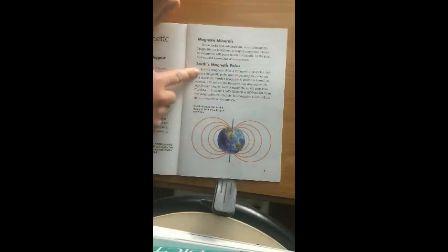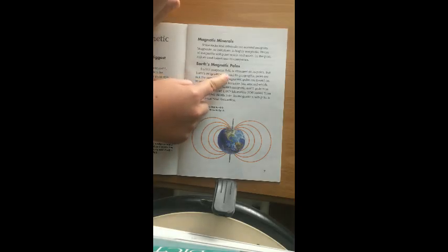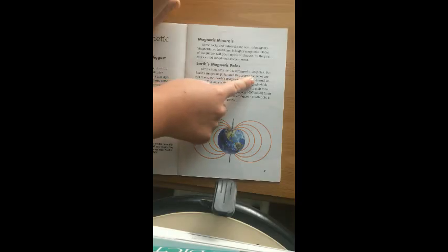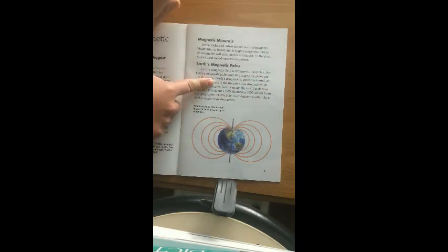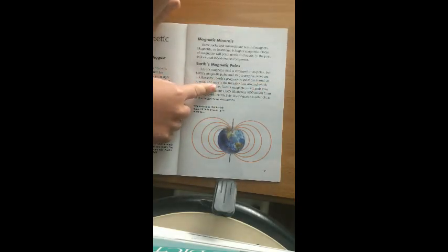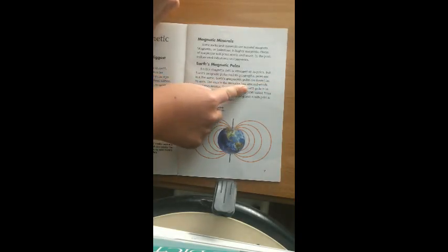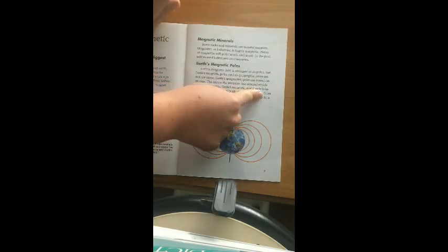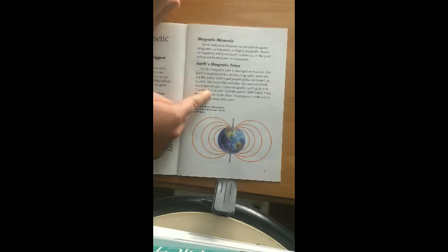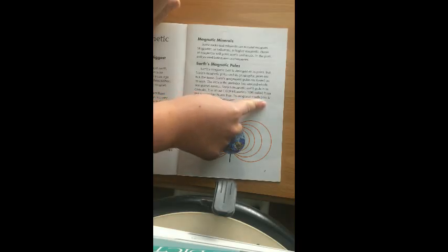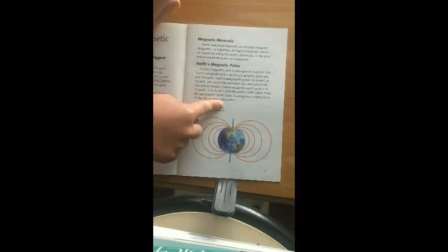Earth's magnetic poles. Earth's magnetic field is strongest at its poles. But Earth's magnetic poles and its geographic poles are not the same. Earth's geographic poles are found on its axis. The axis is the invisible line around which our planet rotates. The Earth's magnetic north pole is in Canada. It is about 1,000 kilometers, 600 miles, from the geographic north pole. Its magnetic south pole is in the ocean near Antarctica.